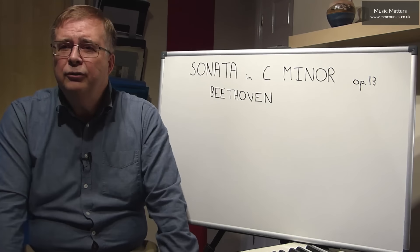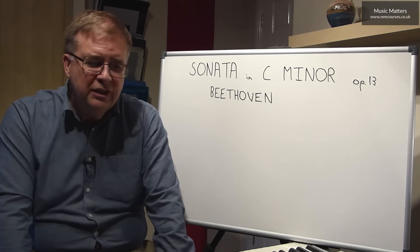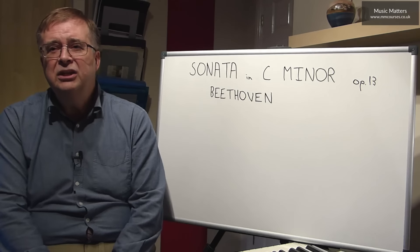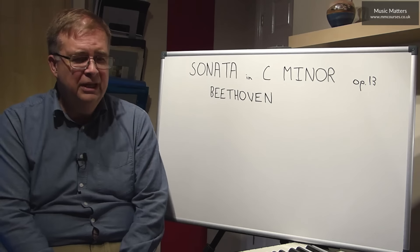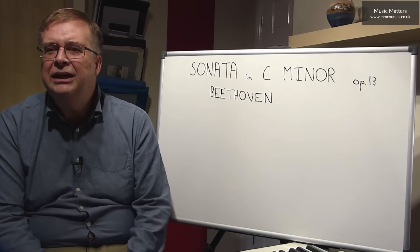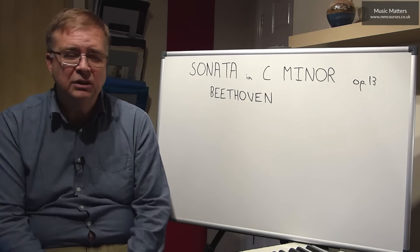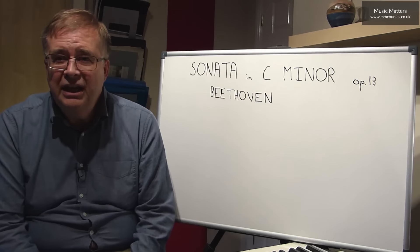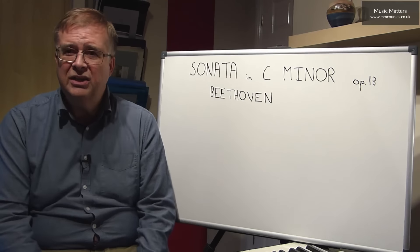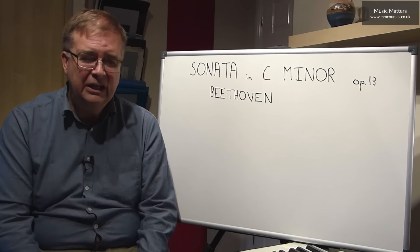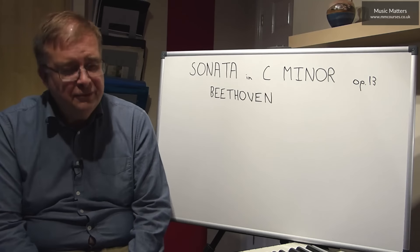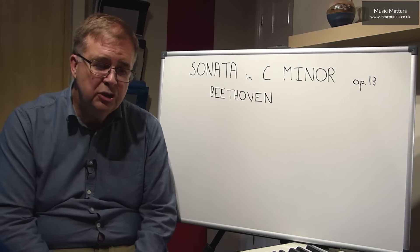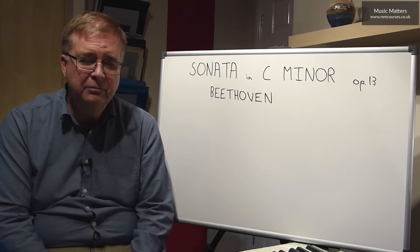The first movement starts with a grave section and breaks into an Allegro di Molto e Con Brio section. The graves make further appearances later in between the allegro sections. In terms of the overall structure, the first movement is in sonata form, even though it's not entirely conventional. We've got this introductory grave section, which is actually quite a big dramatic statement. It's followed by the exposition, going at a quick tempo in 2-2 time.